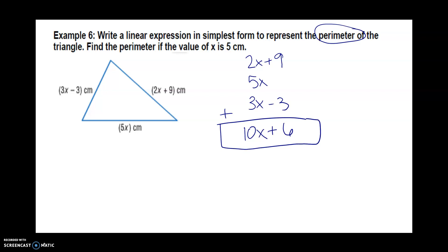You will see the question also says find the perimeter if the value of x is 5. Well now that I have it simplified, I can plug in 5. 10 times 5 is 50, plus 6 means our perimeter would be 56 centimeters.